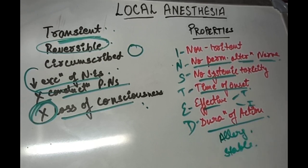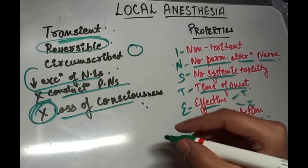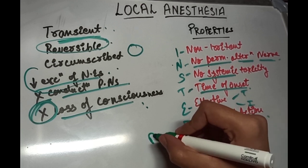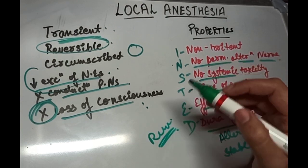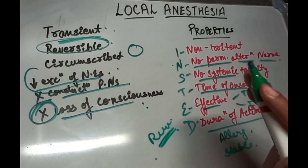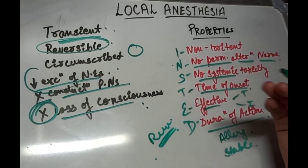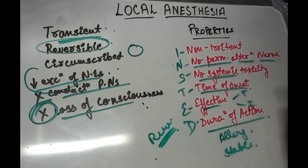There should be no allergic reactions. It should be stable and undergo biotransformation in the body, should not interfere with the healing of the tissues, and should be compatible with the vasoconstrictor drug. It should also not be expensive, and most importantly it should be reversible. The action should be reversible and it should be capable of sterilization.